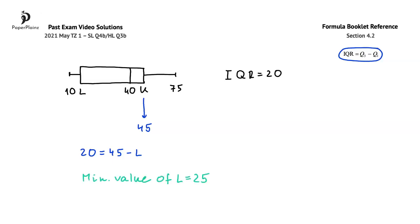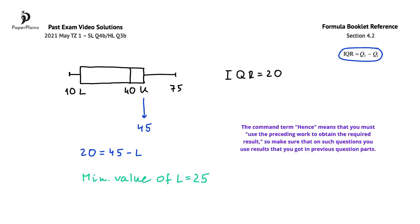Let's see an exam-taking tip that you can take away from here. The command term in this question part is hence. This command term means that you must use the preceding work to obtain the required result, so make sure that on such questions you use results that you got in previous question parts. Here, for instance, we use the value of U, so 45, that we found in question part A.